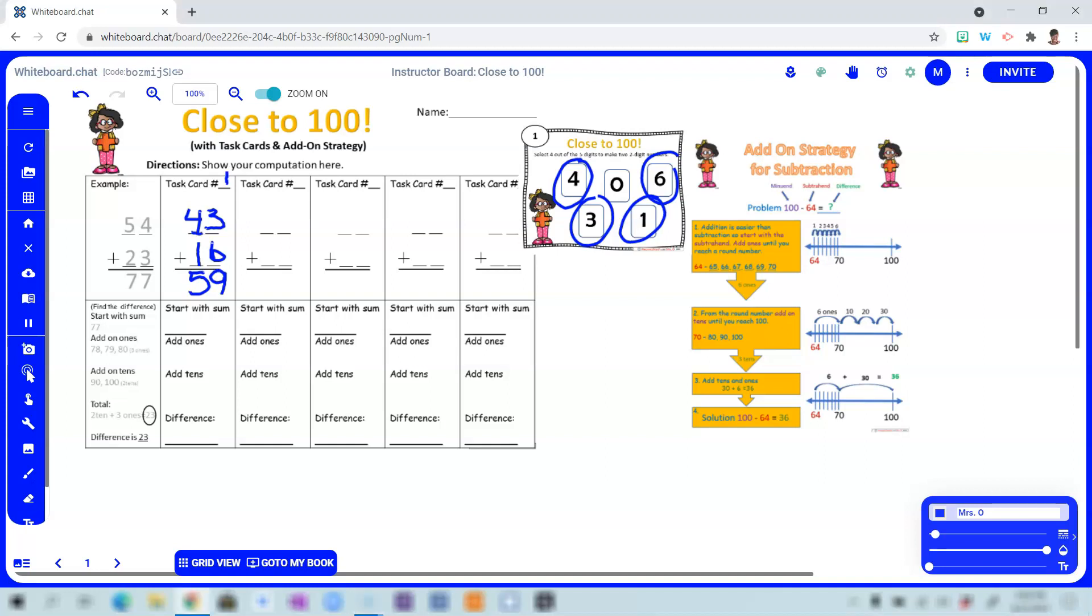Pointing students' attention to the tens place, you want to help them to think of numbers that could easily make a fast 10. For instance, we have one and nine, two and eight, three and seven, four and six, and so on.